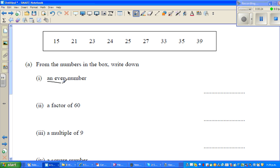Write down an even number. Even numbers start from two - zero can also be considered even. 15 is odd, 21 is odd, 23 is odd, so 24 is an even number. 25 is odd, 27 - they all are odds, so the even number is only 24.